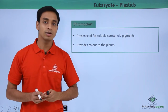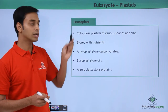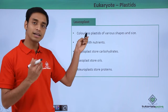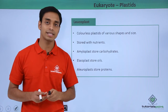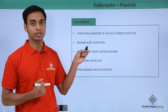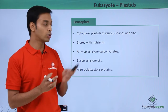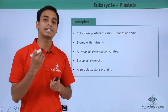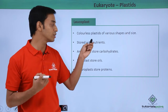The third type we discussed is the leucoplast. Leucoplasts are colorless plastids that have various shapes and sizes. They actually store nutrients, and they are named differently based on the type of food material or nutrients they are storing.